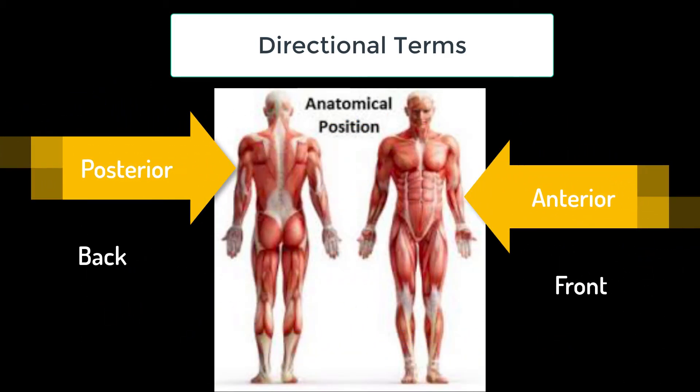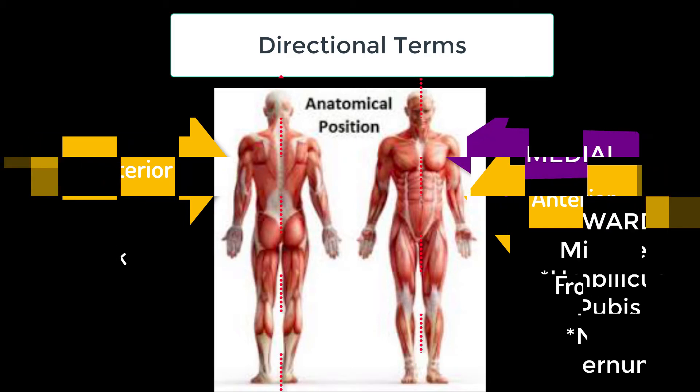Another direction of the body is posterior and anterior. Posterior is the back where your gluteus maximus is and anterior is the front where your chest and abdominals are.